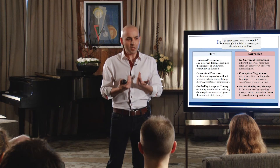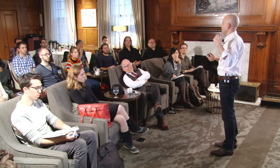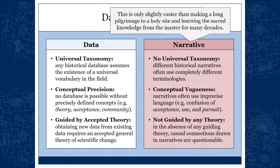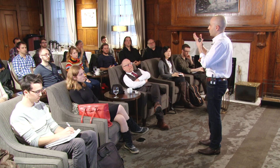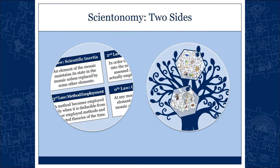If you ask me, there must be an easier way. In astronomy we have that way. In social sciences we have that way. We have the tree of life in biology. It shouldn't be this difficult. The way it is now — having to go into the archives — is only slightly better than making a long pilgrimage to a holy site and learning sacred knowledge from the master for many decades. Ideally, there should be a website where I click on a year and get, to our best knowledge, the state of their knowledge. That's the way it should be.